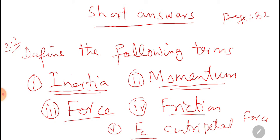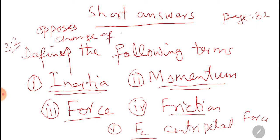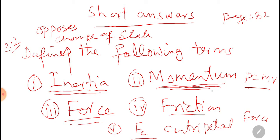We already defined inertia: that property due to which it opposes change of state. Momentum is already defined — momentum is the product of mass and velocity, p is equal to mv. Momentum is a vector quantity; unit is newton second or kilogram meter per second.